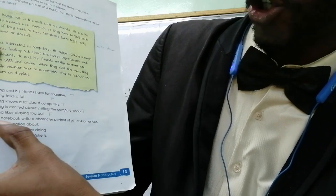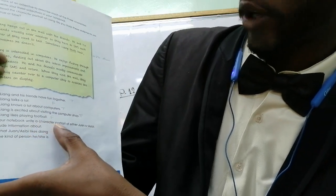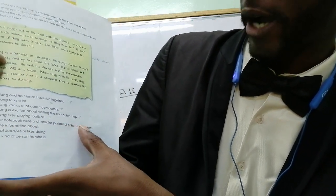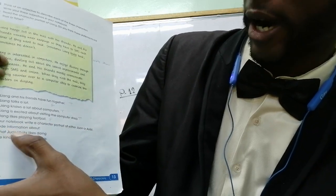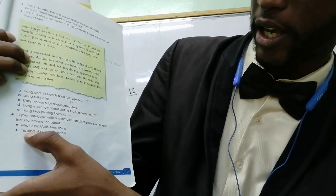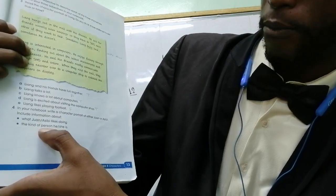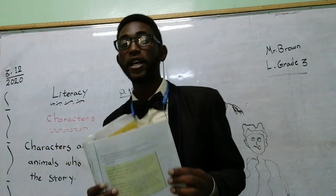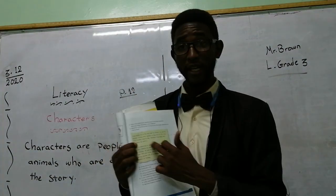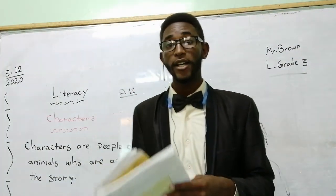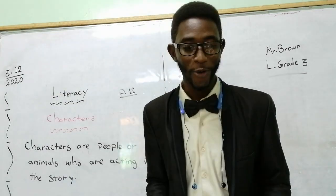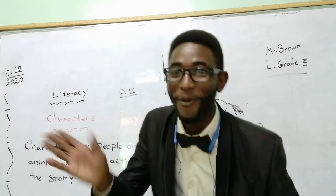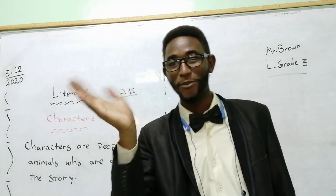We have come to the end of our lesson. Before we go, do this in your notebook: write a character portrait of either Juan or Asibi. Include what Juan or Asibi likes doing and the kind of person he or she is — just like the portrait we did for Liang. Thank you so much, I hope you enjoyed the lesson. Goodbye and have a beautiful time.